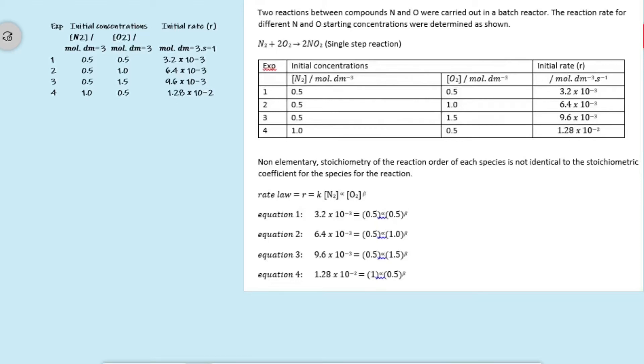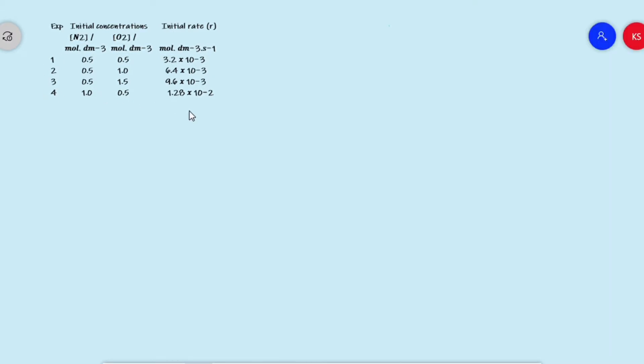Hi there, welcome back. Let us do a non-elementary example. We are told that two reagents, nitrogen and oxygen, are carried out in a batch reactor. The different initial concentrations for nitrogen and oxygen are given for the four experiments that were carried out. Here is my table with my four experimental data.